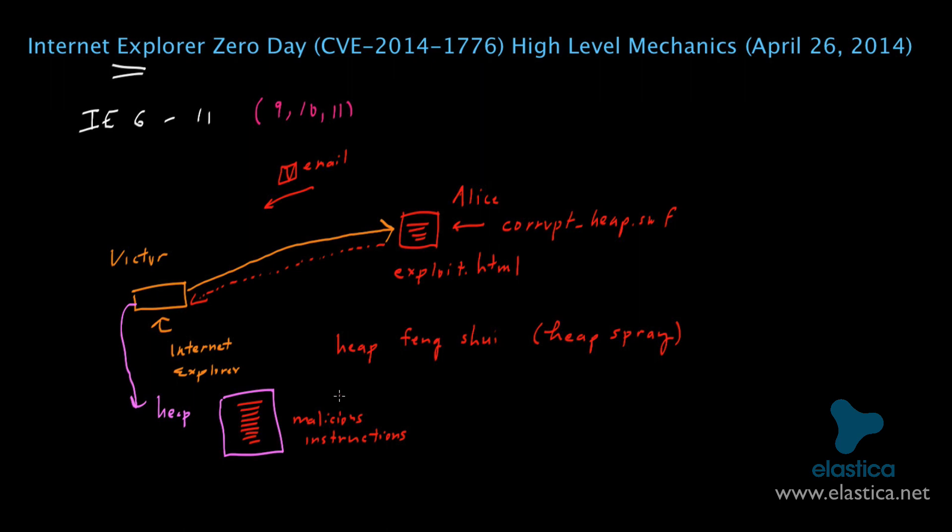Now for this next step, the attacker Alice takes advantage of a vulnerability in Internet Explorer known as a use-after-free vulnerability. What this type of vulnerability entails is a situation where a process, in this case a process associated with Internet Explorer, uses some object, frees the object, and then tries accidentally to reuse it.